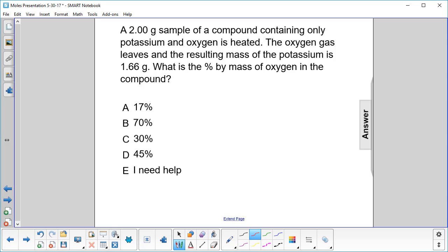Let's find out how much oxygen left. So we have the total mass, which is 2.00 grams. The potassium is 1.66 grams. So we have 0.34 grams of oxygen.